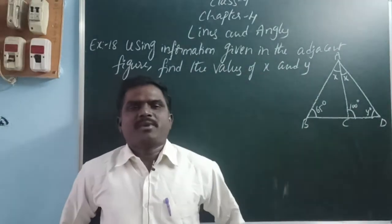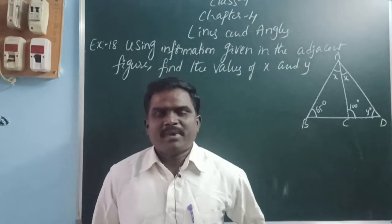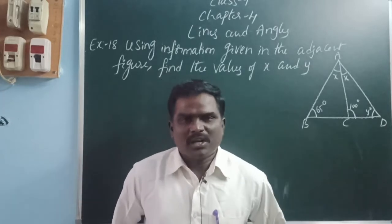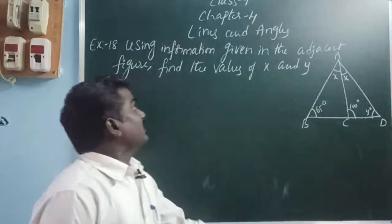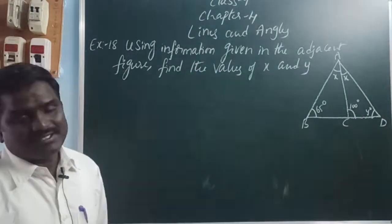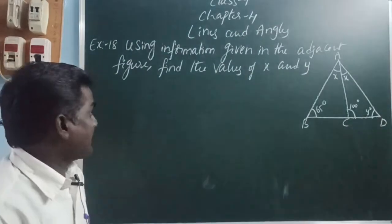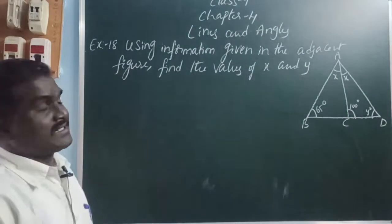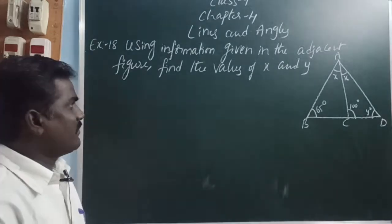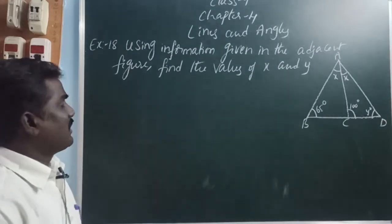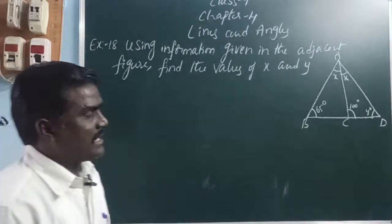Hello, welcome back to our YouTube channel Math with Balakrishna. Today I am going to explain Class 9th Chapter 4, Lines and Angles, Example 18. Using the information given in the adjacent figure, find the values of X and Y.